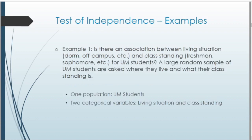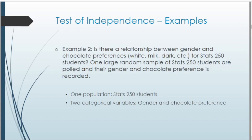A couple of examples for a test of independence. First: is there an association between living situation — dorm, off campus, etc. — and class standing — freshman, sophomore, etc. — for UM students? A large random sample of UM students are asked where they live and what their class standing is. We have one population of UM students and two categorical variables: living situation and class standing. Second example: is there a relationship between gender and chocolate preference — white, milk, dark, etc. — for STATS 250 students? We have one population and two categorical variables — gender and chocolate preference — and we want to see if they are associated.